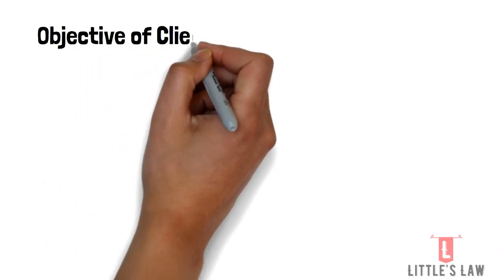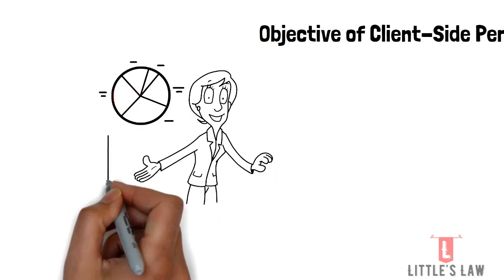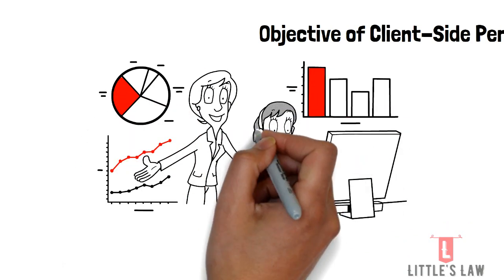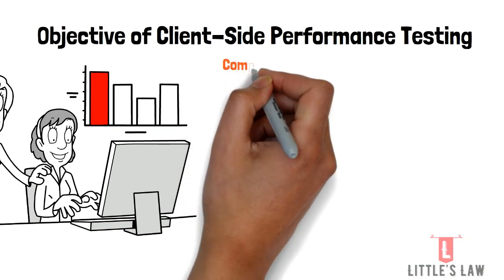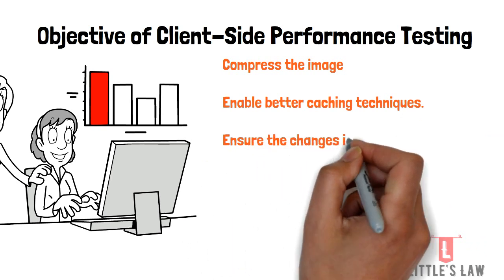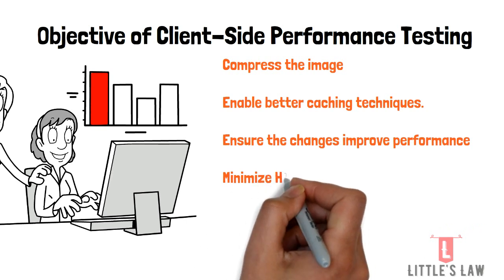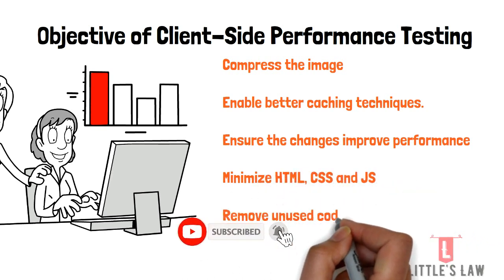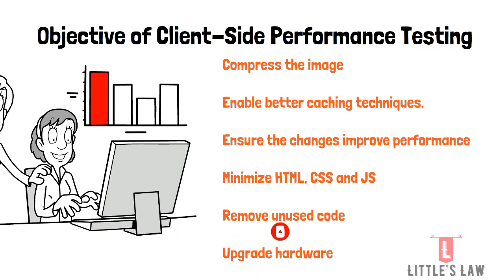What is the objective of client-side performance testing? The main thing to understand is why we should do client-side performance testing when we already have server-side testing. The objective is to evaluate and make necessary changes in problem areas. This includes compressing images and JavaScript code, providing faster response times, enabling better cache techniques — since JavaScript code caching reduces startup time — and ensuring changes from server-side testing do not impact client-side performance.